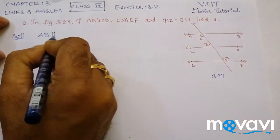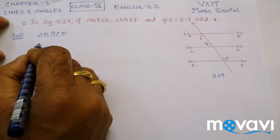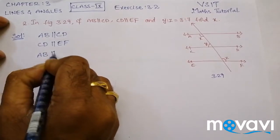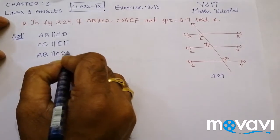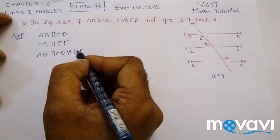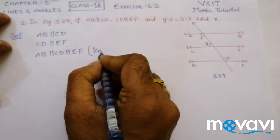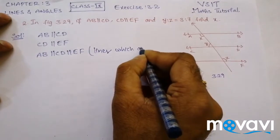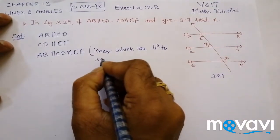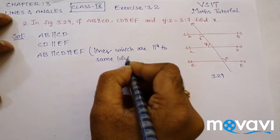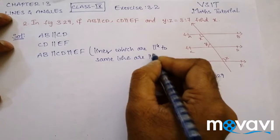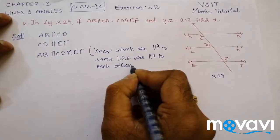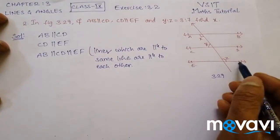AB is parallel to CD and CD is parallel to EF, then surely AB is parallel to CD which is parallel to EF. The reason is: lines which are parallel to the same line are parallel to each other. Therefore AB is parallel to EF.